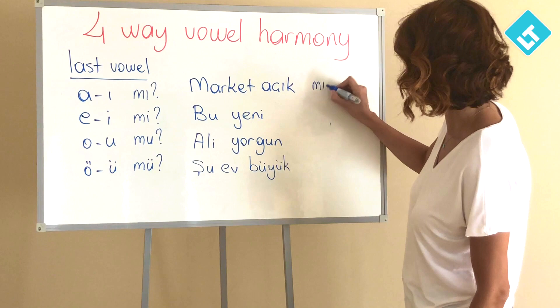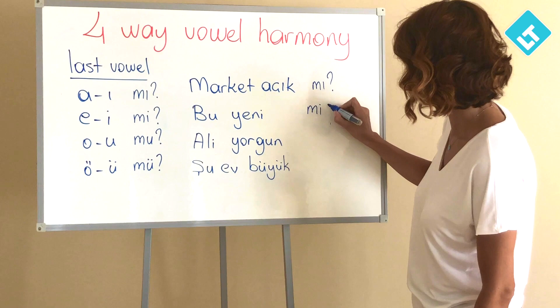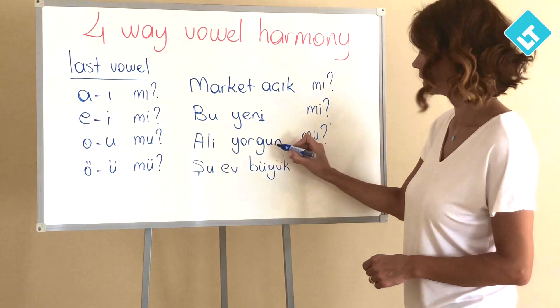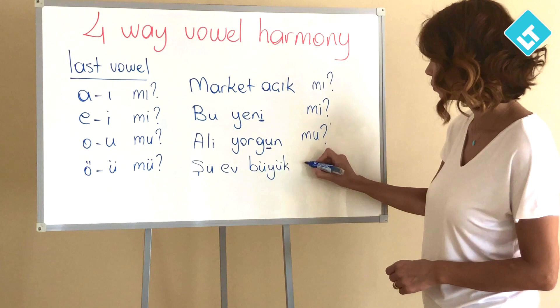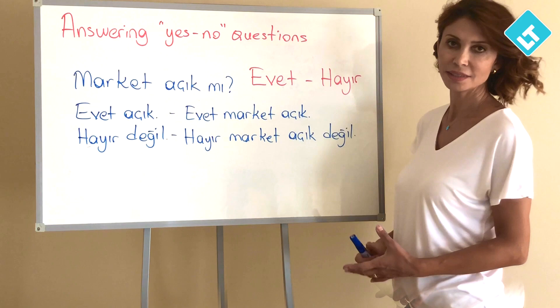Now we add the mi particle to make questions. Market açık mı? — I use mı because this word ends with ı. Bu yeni mi? — Is this new? The last vowel is i. Ali yorgun mu? — Is Ali tired? Because the last vowel is u. Şu ev büyük mü? — Is that house big? I use mü because the last vowel is ü.